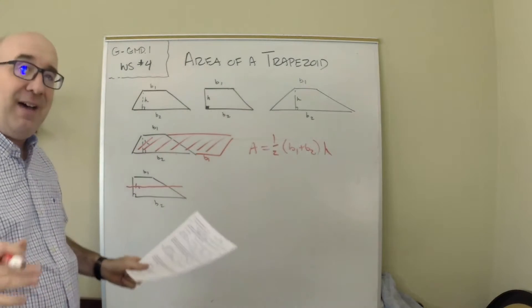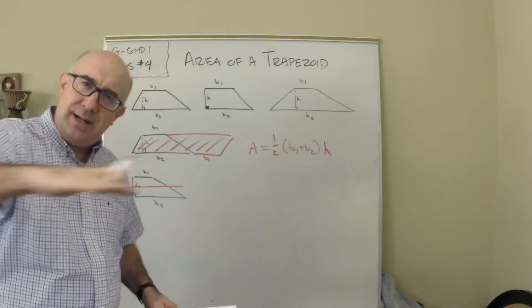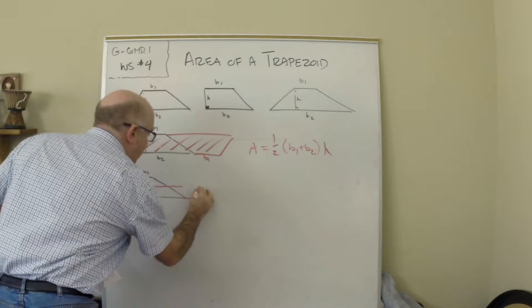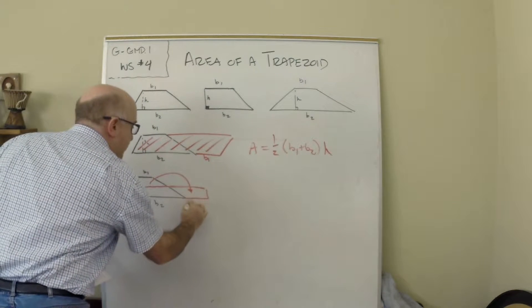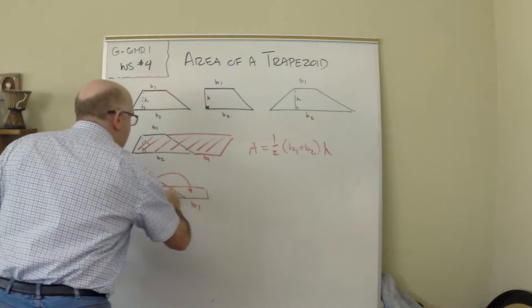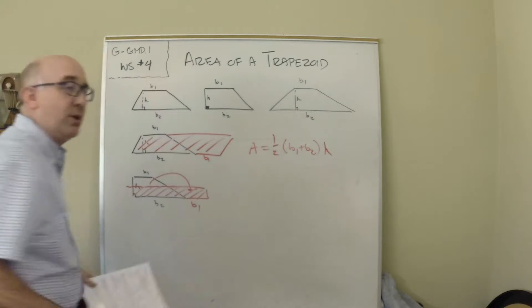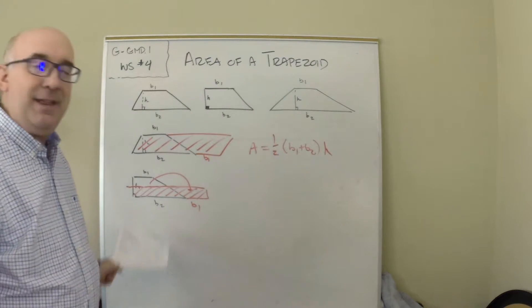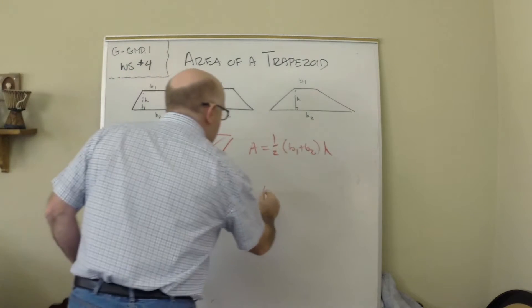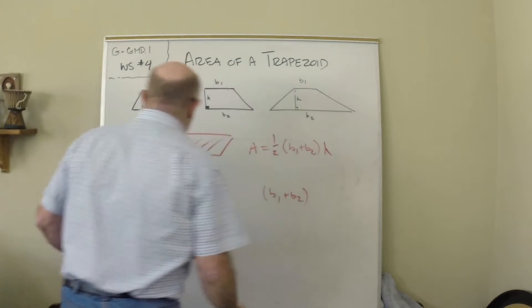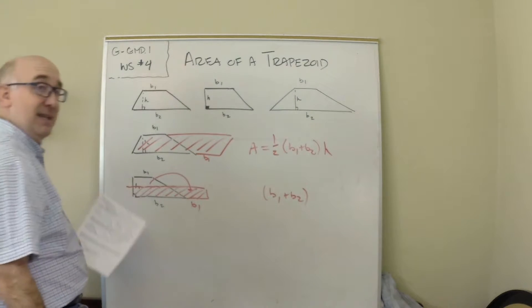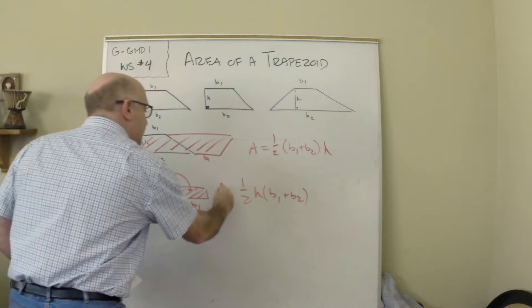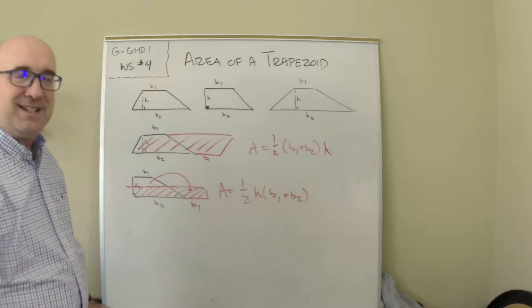You could do what I call the halving technique, which is to cut it in half and do the same kind of tricky little rotation. This little piece drops in there and you get in this case a rectangular shape. It could be a parallelogram-like shape. But you'll notice again the base is b1 and b2. You'll notice that this time the height is exactly half of the original height. This is the formula once again, using kind of a halving technique.